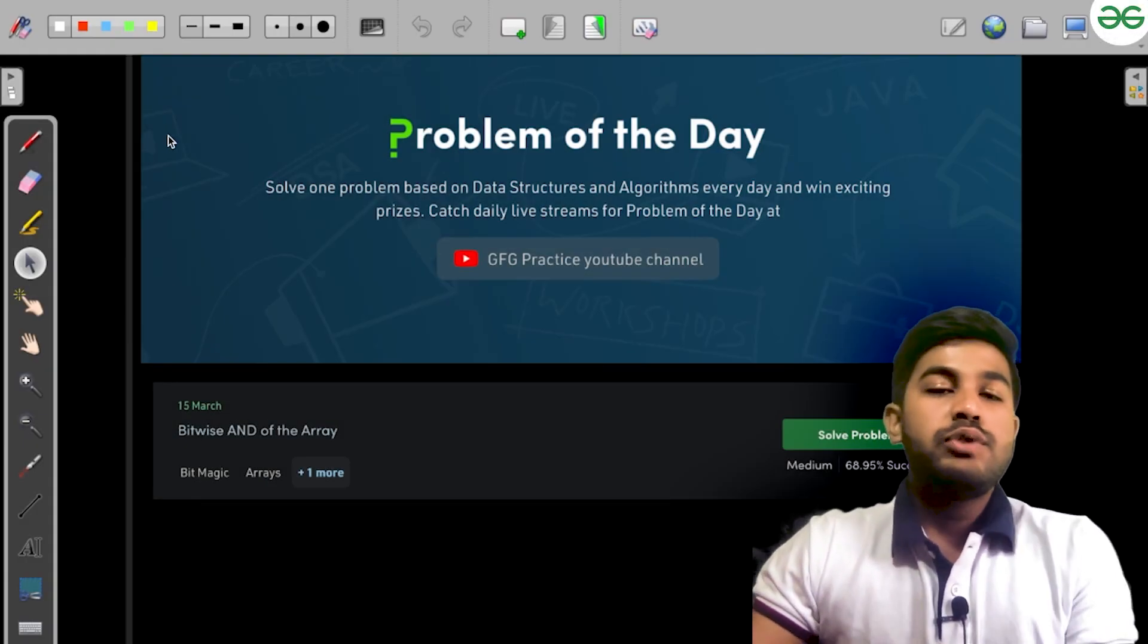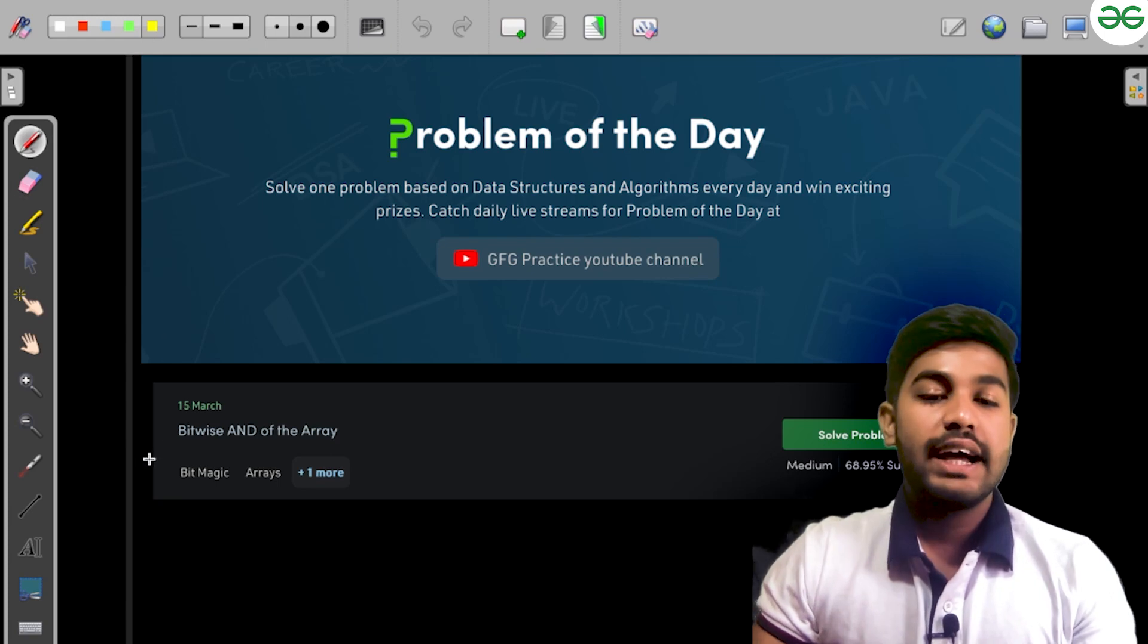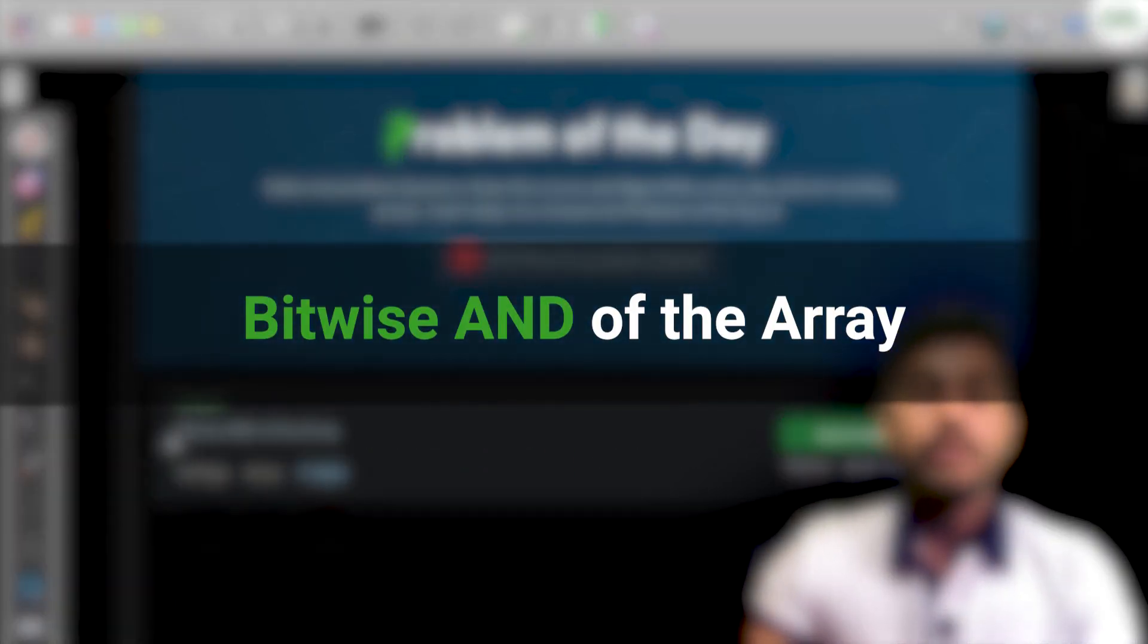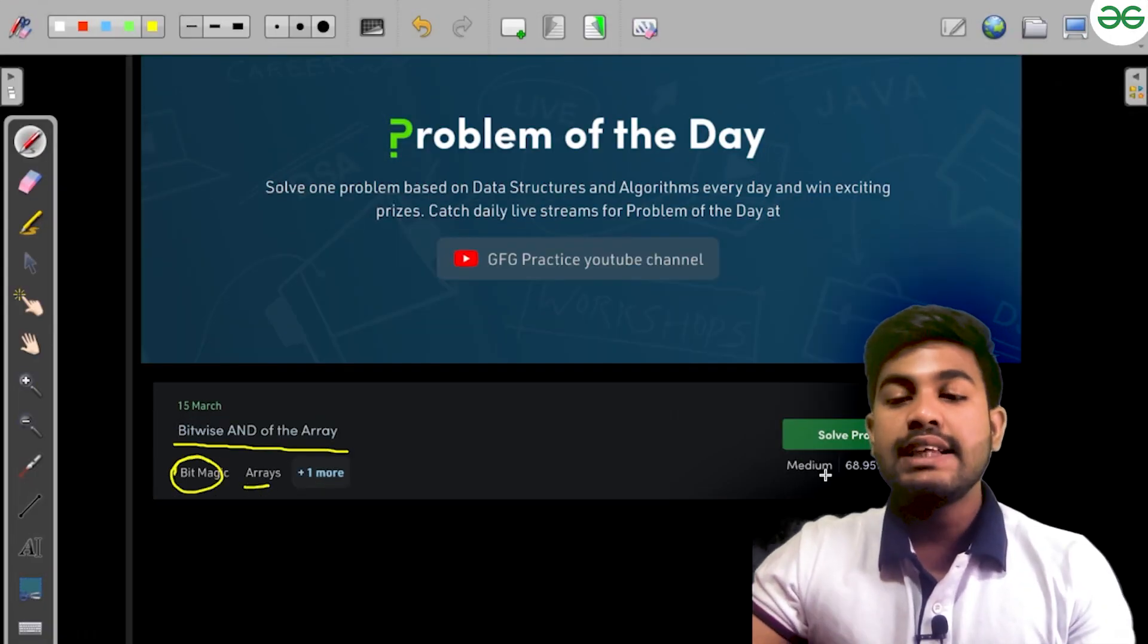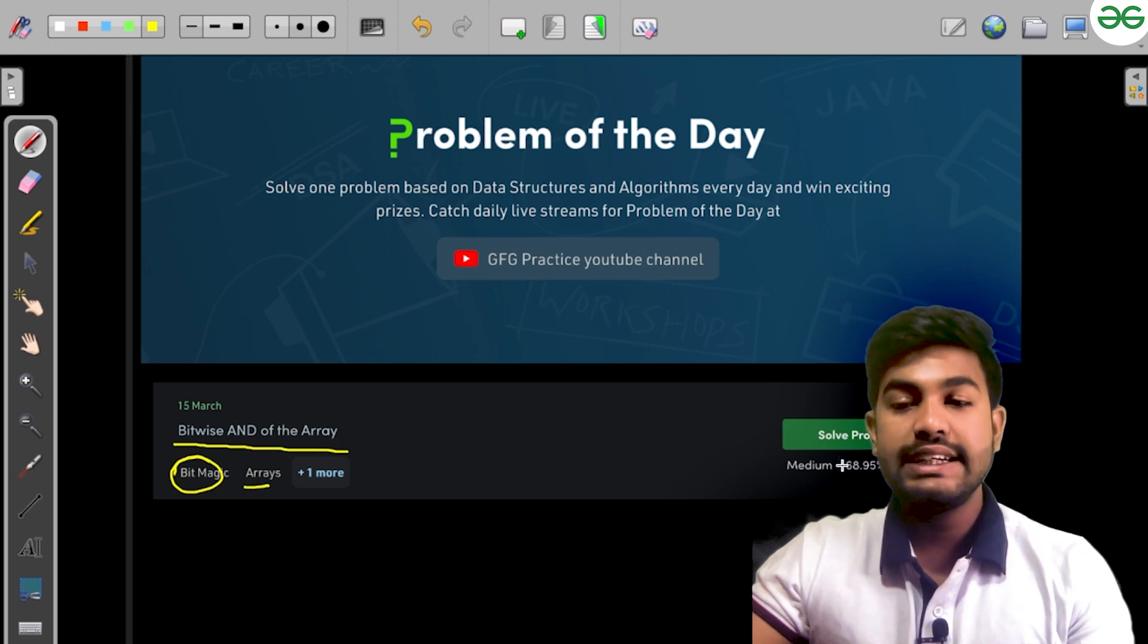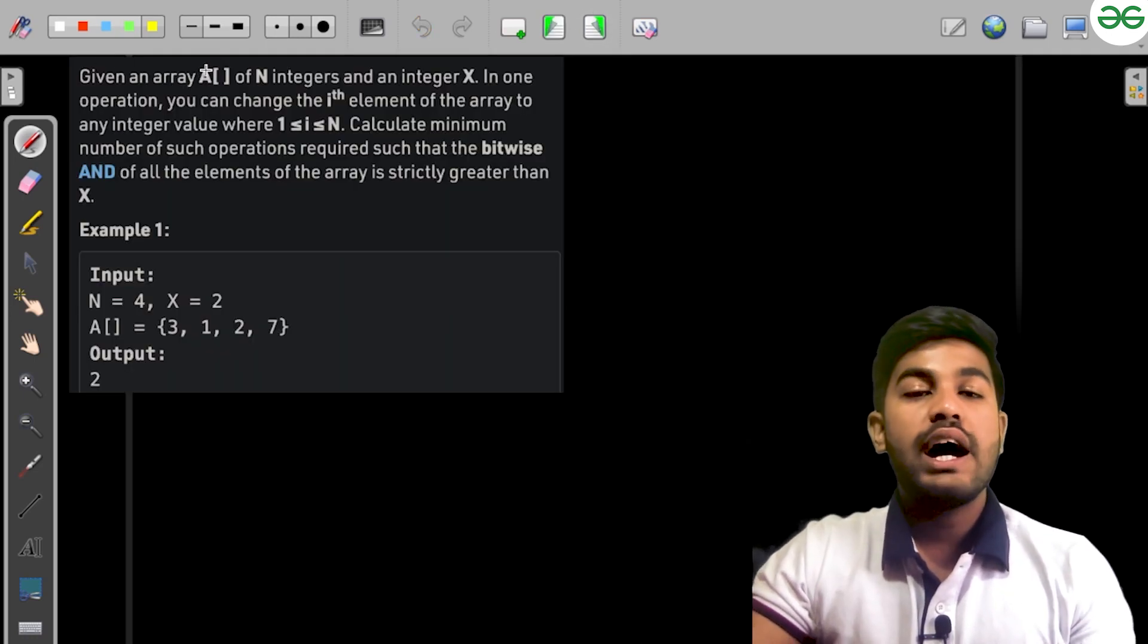Hi and welcome to GeeksforGeeks. Today we'll be discussing the solution video for Bitwise AND of the Array. This problem revolves around bit magic and arrays, has a 69% success rate, and is a medium level problem.